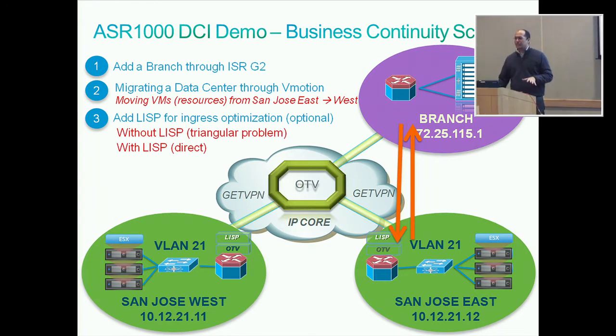Is everyone familiar with what LISP is and how it works? In this example, how would your customer typically have storage configured? Storage is another problem. It's not local storage here — we have NFS, shared storage. It's not local to the hard disk. If you want to do a cold move it really doesn't matter. So as the VM moves, it's still pulling to the storage at the other location.